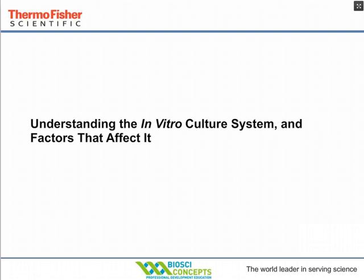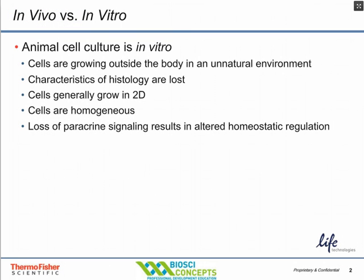On the second slide, we'll note that when cells are grown in vitro, cells do grow outside the body. And the interactions between various cell types and extracellular matrix is lost. Therefore, cells are primarily growing in two dimensions. Remember that naturally, in most normal situations, we don't have a homogeneous population of cells — we actually have a mixture of cells that contribute via paracrine signaling and so forth, which is altered during in vitro cell culture growth.